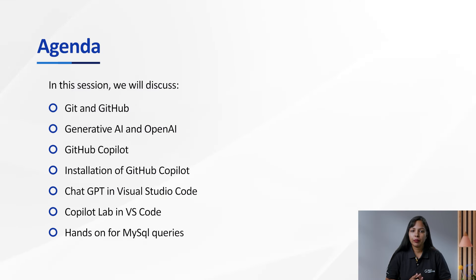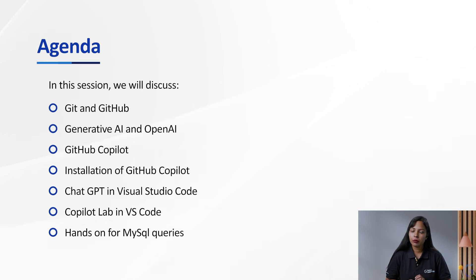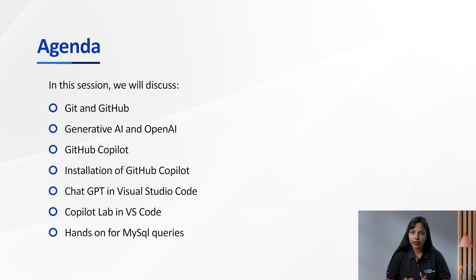I'll be talking about what is Git and what is GitHub, because before knowing what is GitHub Copilot, you need to understand what is Git and what is GitHub. And as Copilot is based on an artificial intelligence concept, you need to know what is generative AI and what is OpenAI, because whenever we talk about GitHub Copilot, OpenAI is always associated with it.